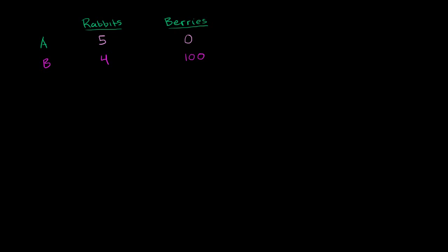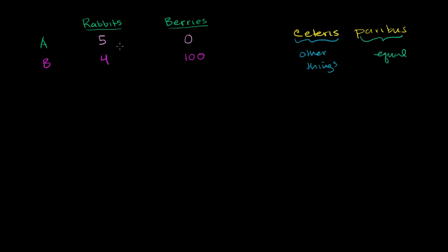The general term for this — and it sounds very fancy — is ceteris paribus. Anytime someone says ceteris paribus, they're saying we're assuming everything else is being held equal. Ceteris means 'all other things' — you're probably familiar with 'et cetera,' it's the same word. Paribus means 'equal.' So when going from scenario A to scenario B, you're not changing your sleep, your geography, your tools or technology. Everything else is equal; the only variable changing is how much time you allocate to finding rabbits versus finding berries.